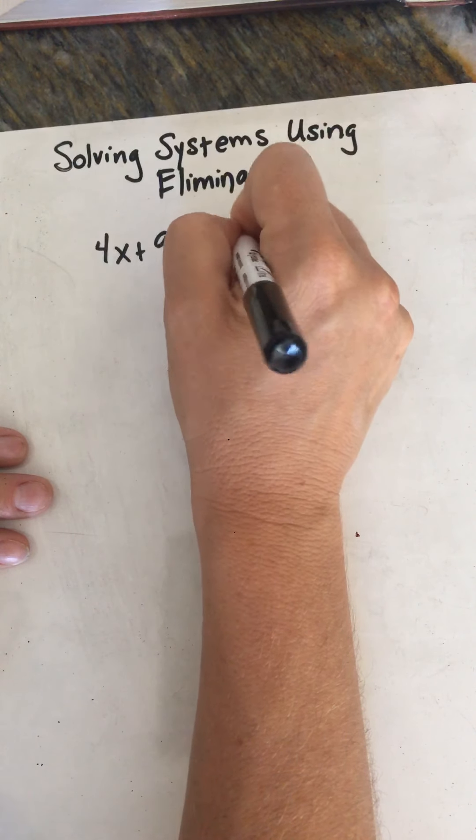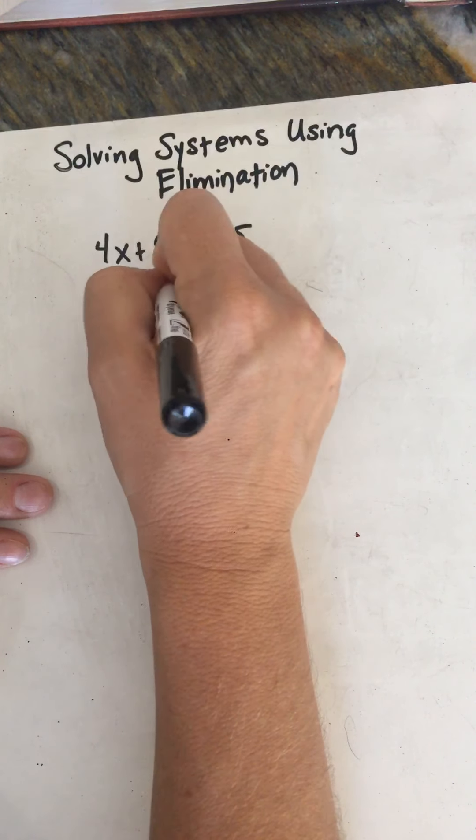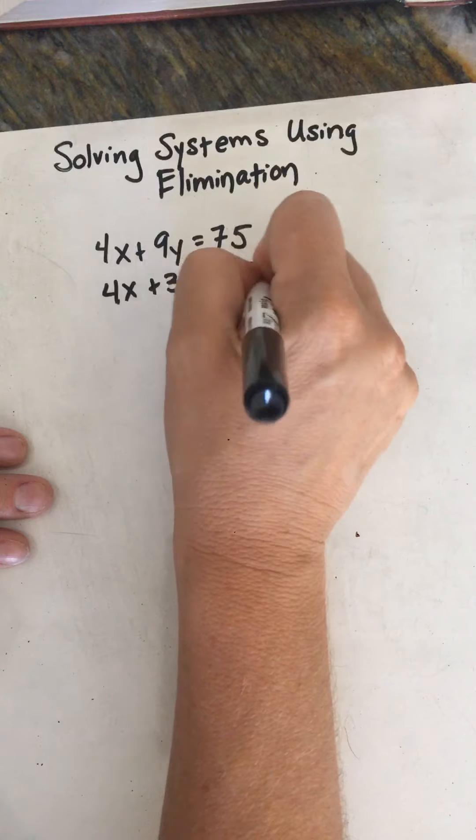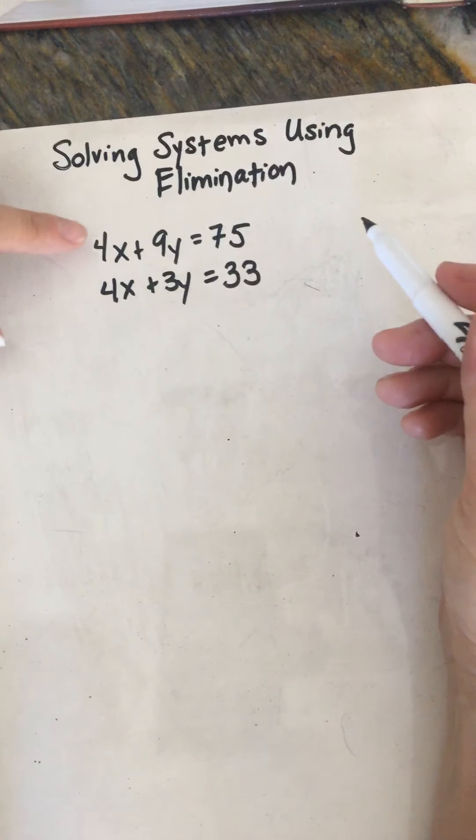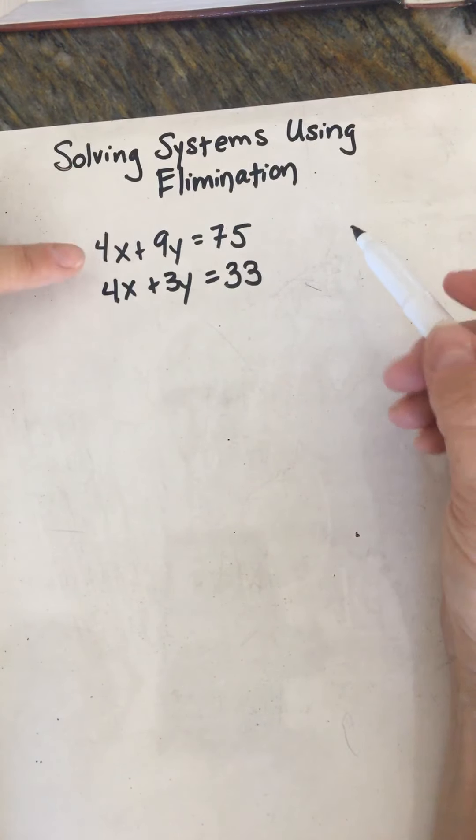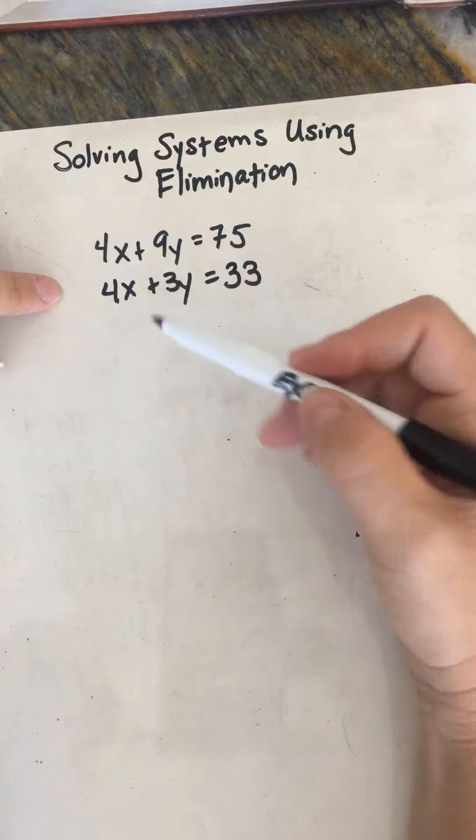All right, so with elimination, when you've got a system like 4x plus 9y equals 75 and 4x plus 3y equals 33, looking at the system, notice that the x terms are identical.